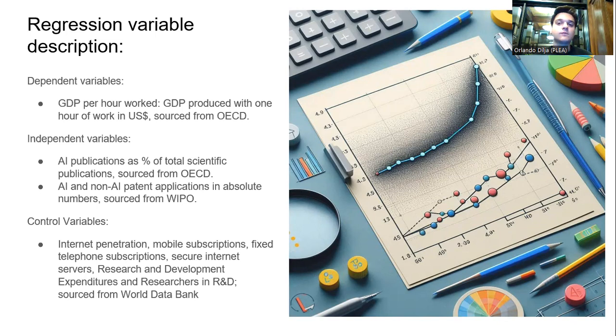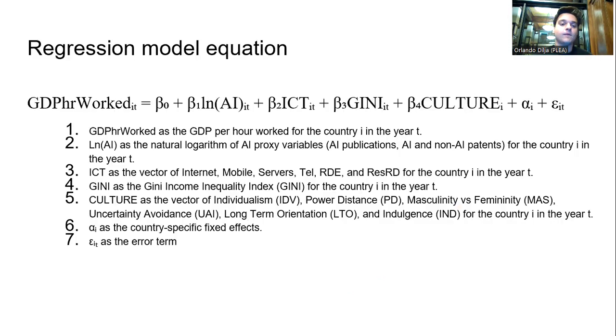Our regression model is as follows. Here we can see the dependent variable GDP per hour worked for country i in year t, our constant, and also the natural logarithm of AI, which is a vector of the variables: AI publications, AI and non-AI patents. Also ICT as a vector of internet, mobile, servers, telephone subscriptions, researchers in R&D, and R&D expenditures, Gini income inequality, and also Hofstede's cultural variables.